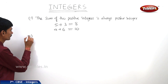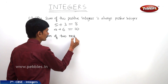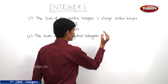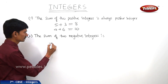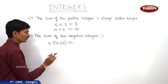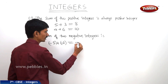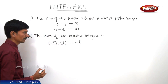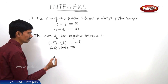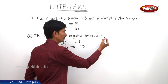Now let us see what is the sum of two negative integers. Taking two negative integers: minus 5 plus minus 3. When we add negative integers, we move left on the number line, giving us minus 8. So the sum of these two negative integers is again a negative integer. Also, minus 4 plus minus 6 equals minus 10, which is also a negative integer. So the sum of any two negative integers is always a negative integer.